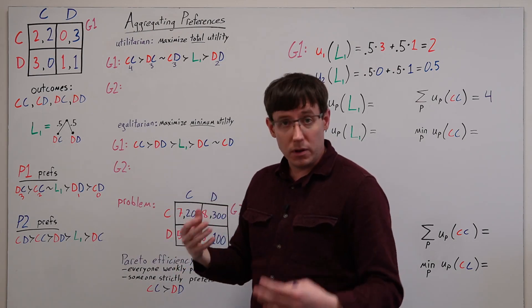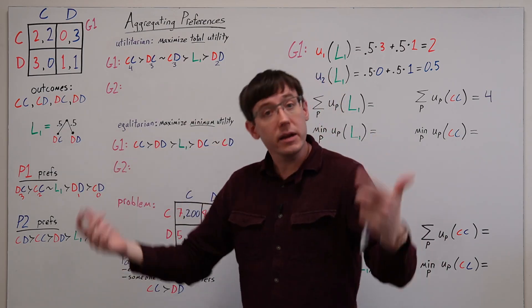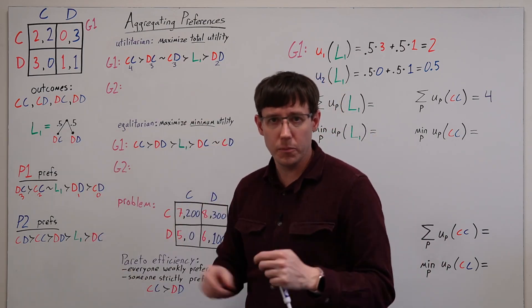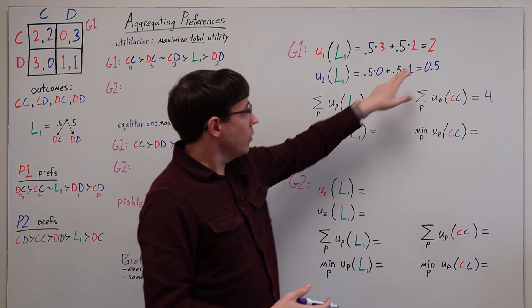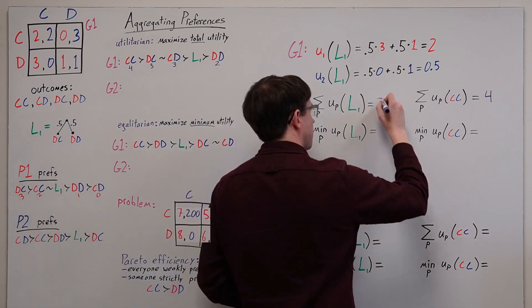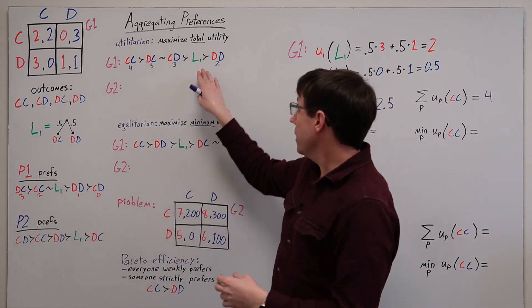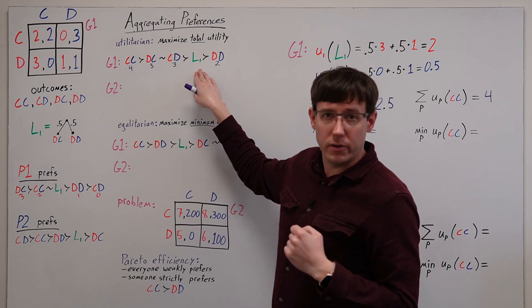And this gives us a ranking over the outcomes according to the utilitarian criterion. And for lotteries that randomize over the outcomes, we can also add up the expected utilities for the players. And so for L1, we would add up these individual expectations for a total of 2.5, which would order it here according to our criterion.